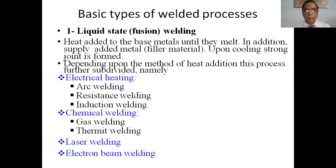There are two basic types of welding processes: liquid state welding and solid state welding. In liquid state welding, that is fusion welding, heat is added to the base metal until they melt. In addition, filler materials are supplied. Upon cooling, the joint is formed. Depending on the method of heat addition, this process is subdivided into electrical heating, chemical welding, laser welding, and electron beam welding. Under electrical heating: arc welding, resistance welding, and induction welding. Under chemical welding: gas welding and thermite welding.